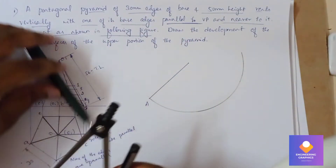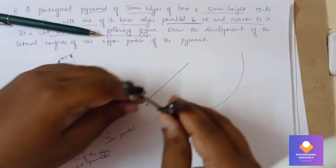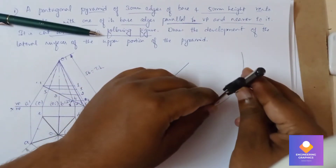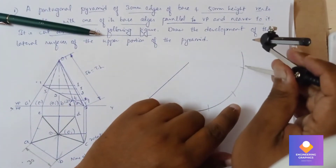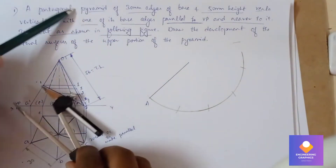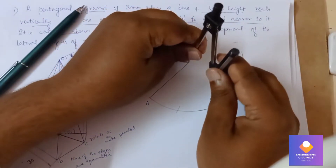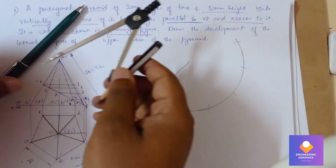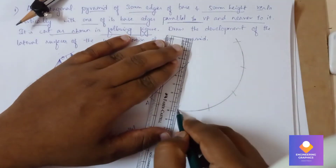Measure 30mm and cut five arcs, because it is a pentagonal pyramid so you can cut five arcs. Extend that curve — total five arcs to cut because it is a pentagonal pyramid. Connect with the vertical edge.